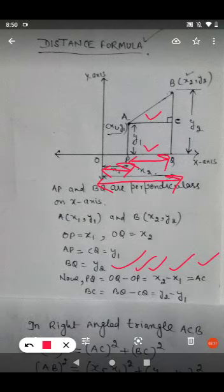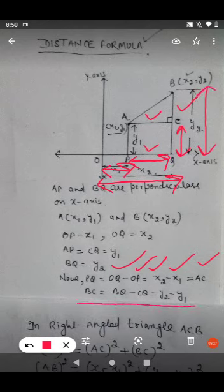Similarly, to calculate BC, we have to subtract CQ from BQ. So here BC is equal to BQ minus CQ. As BQ is y2 and CQ is y1, it will be y2 minus y1.